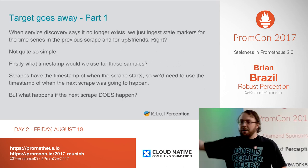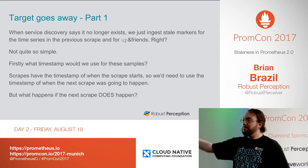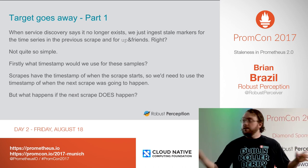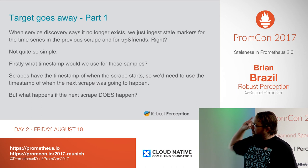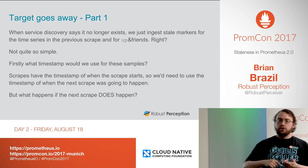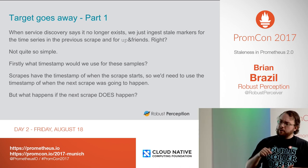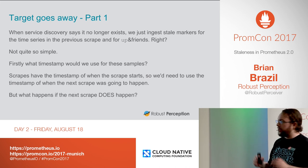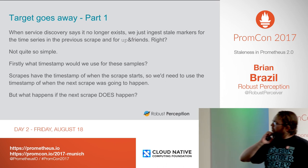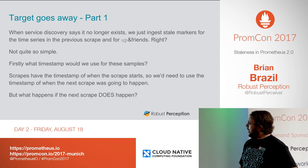For service discovery: when a target no longer exists, it goes stale. We ingest stale markers for everything we scraped previously, including up, scrape duration seconds, scrape samples scraped, and scrape samples post relabeling. But it's not that simple — the first question is what timestamp should these stale markers have? The timestamp used for scrapes is always when the scrape starts, and because of how Go works internally, that normally ends up being exactly the scrape interval, which is great for compression.